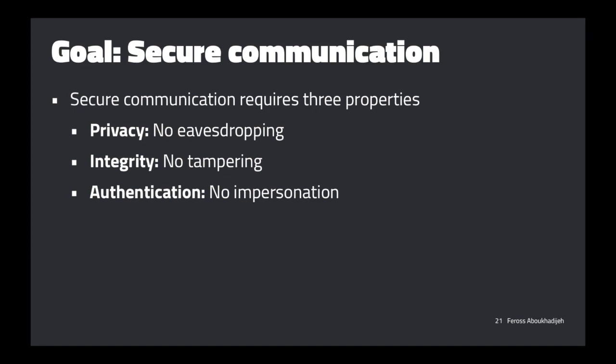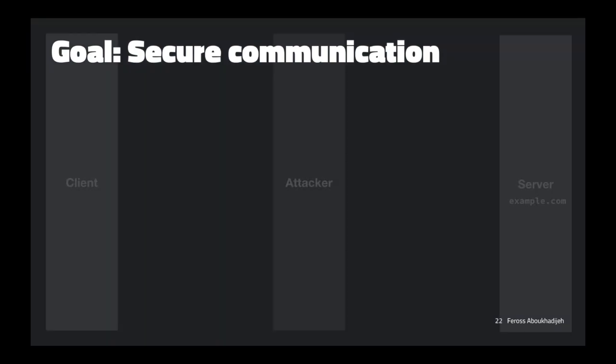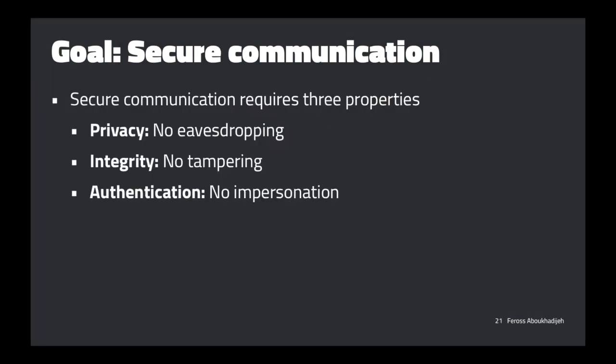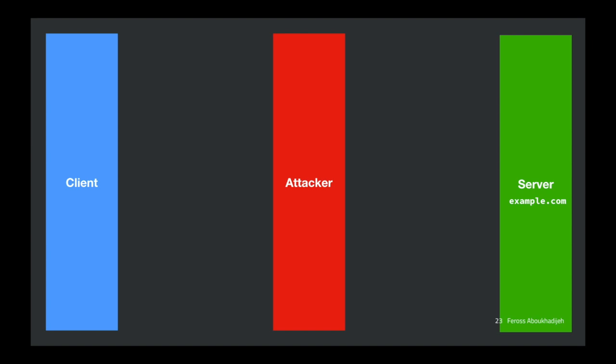We're going to talk about how to get all three of these things using TLS. Starting at a high level — I'm representing a secure connection with a little green box with a lock in it. We want to send a request to the server. The attacker is still there; we're still potentially using an untrusted router or ISP. But somehow the protocol ensures we get those three properties in the presence of that attacker.